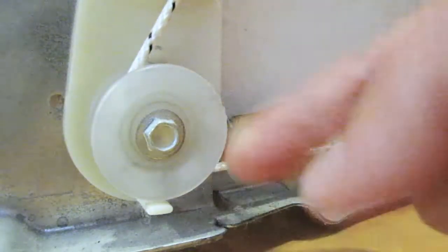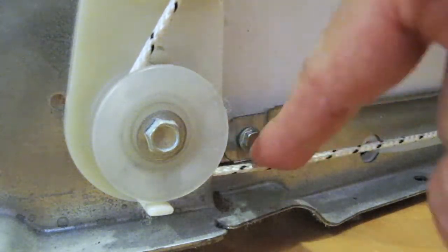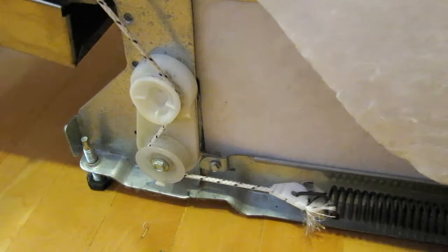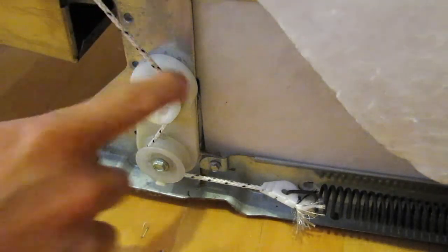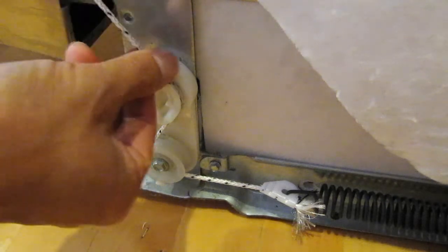Basically the balance link cable needs to be greased up so it slides smoothly between the pulleys. Apply lubricant along the path of the cable and then repeat the process on the other side.